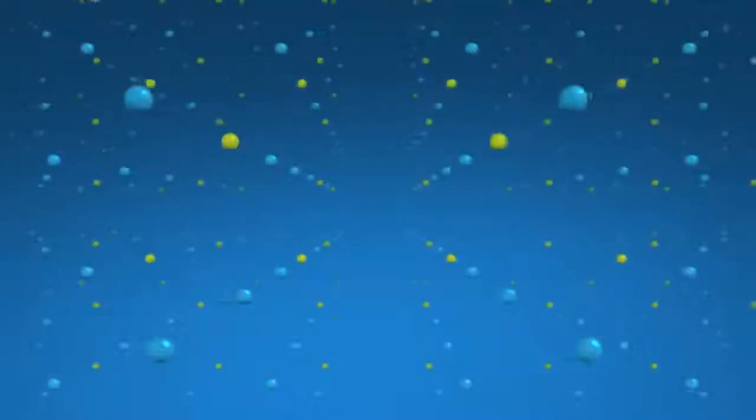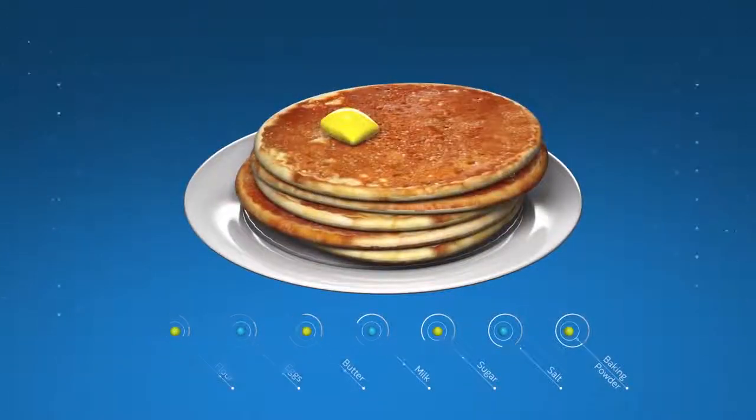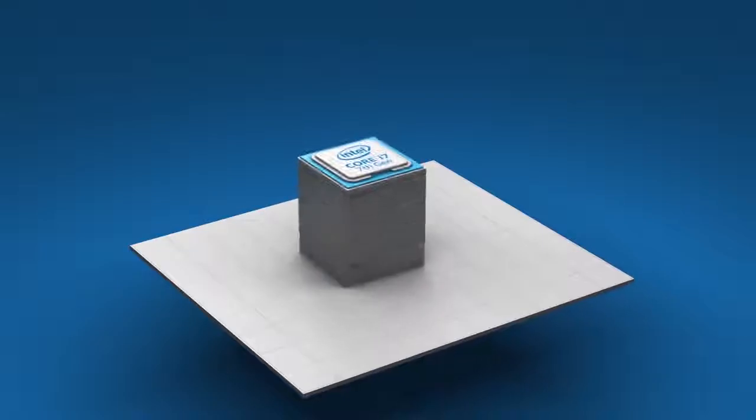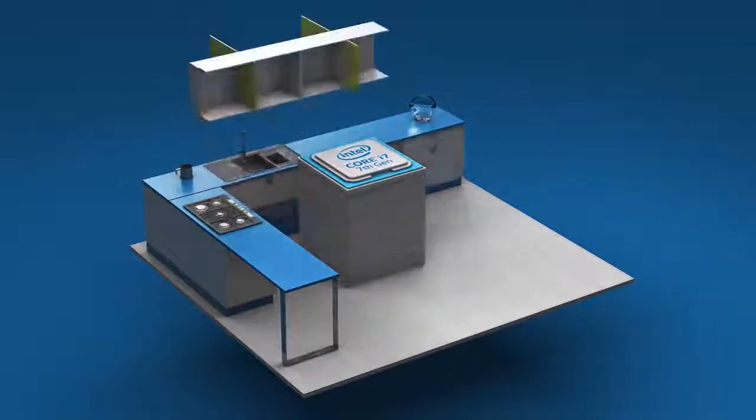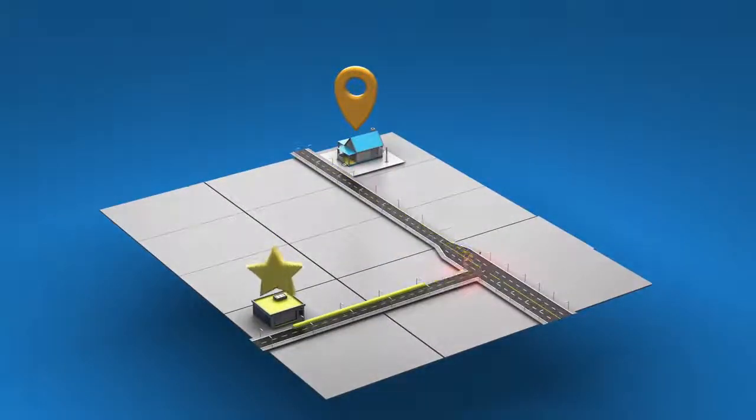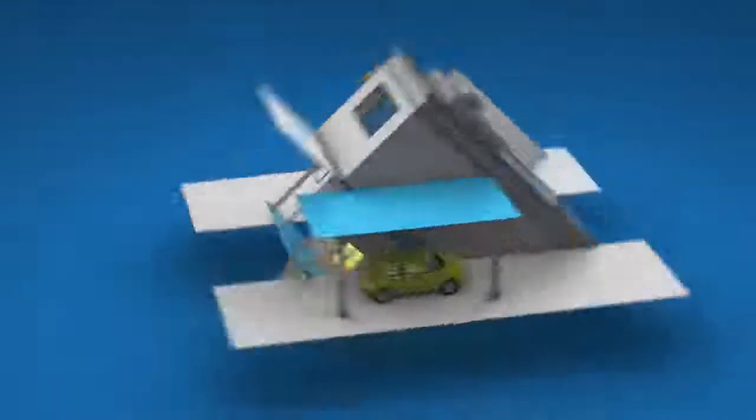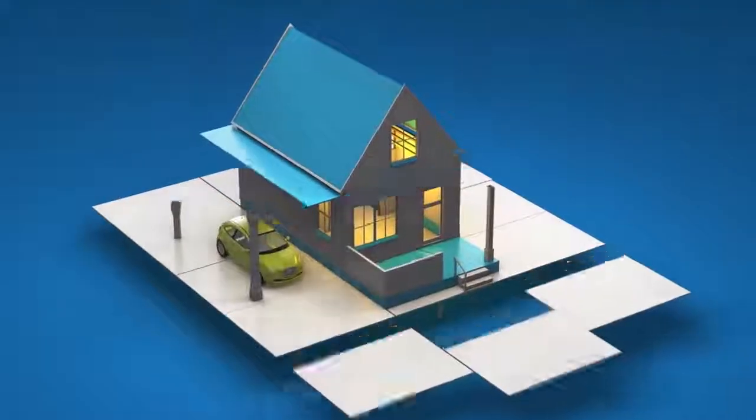Start by thinking of the data your computer uses as the ingredients you need to make pancakes. Imagine the computer's processor as the cook and the DRAM as the kitchen countertops. The store that sells all these ingredients is the hard drive, and it's a megastore two towns away. To get the ingredients, the cook has to drive to the store and bring the ingredients back to the countertop where they are needed to cook.